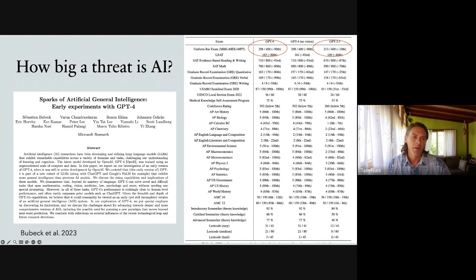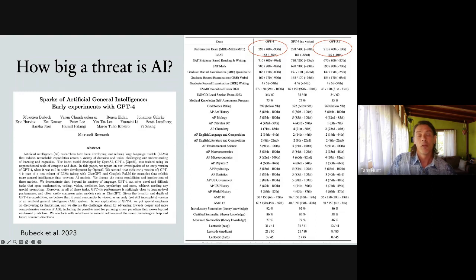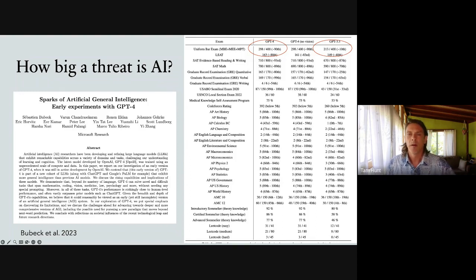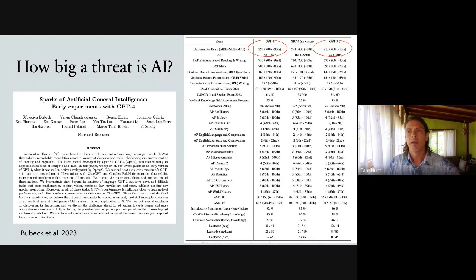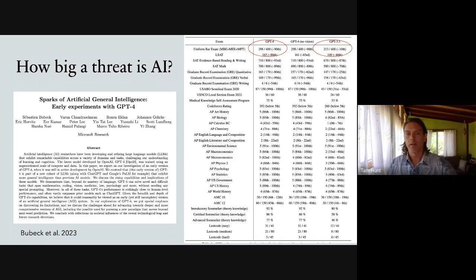A big preprint paper, Bubeck et al. 2023, did hundreds of tests against GPT-4 starting last fall. On the uniform bar exam — a test of reasoning, not just knowledge — the former GPT did better than 10% of human test takers. GPT-4, the next iteration released early this year, did better than 90% of all human test takers. The same kind of progress happened for all these other standardized tests, which are often tests of reasoning, not just knowledge that can be swept from the web. This is remarkable progress.